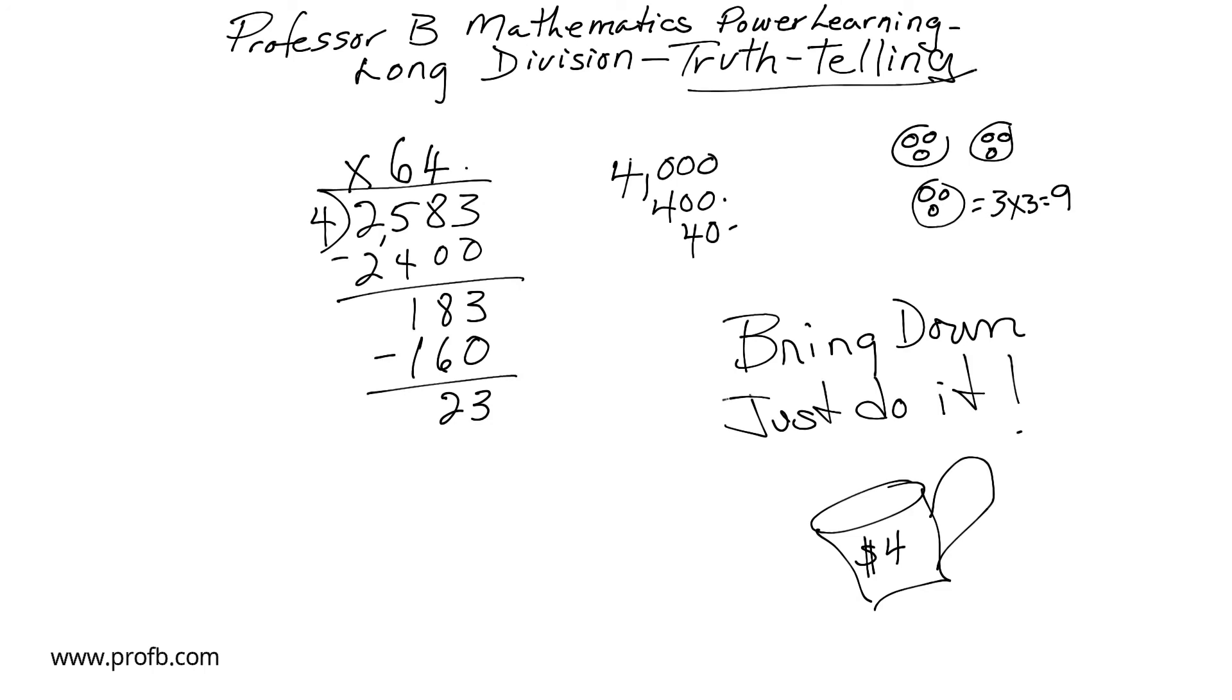And of course we're at the ones place. And we know we can buy five more cups. Five times four is twenty dollars. And we end up with a remainder of three dollars. Makes perfect sense.